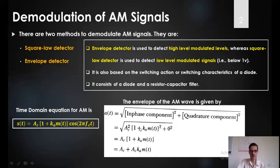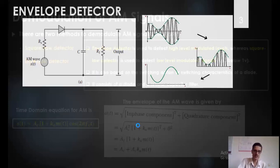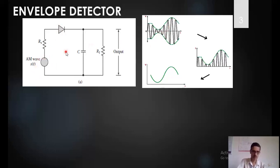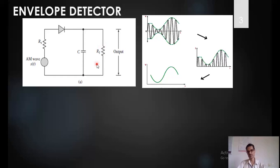How exactly do we do this? I will explain using a simple circuit diagram. We are using a diode in the envelope detector — it is basically a rectifier, a simple rectifier or linear diode demodulator. For this linear diode demodulator, an AM wave is given as input in series with some resistance RS, along with a capacitor and a load resistor connected in parallel. This forms a simple envelope detector.